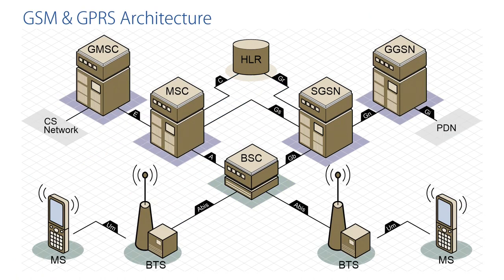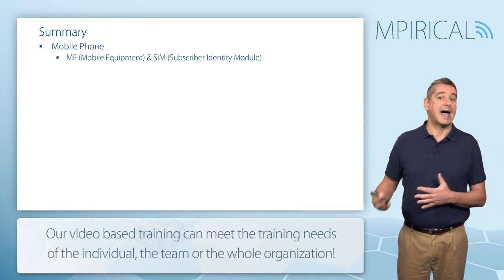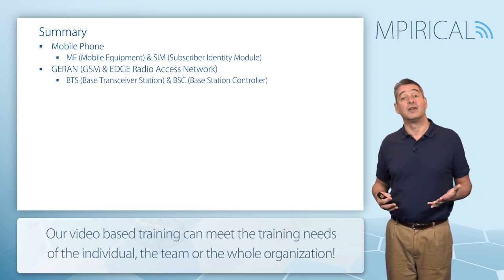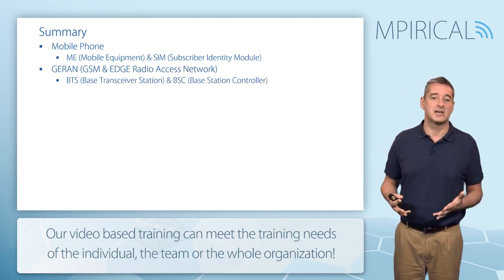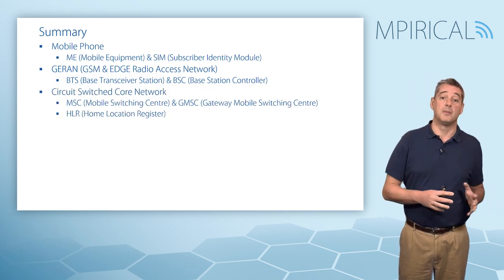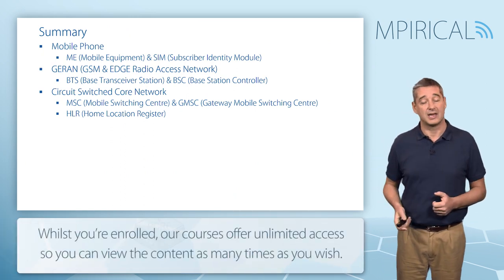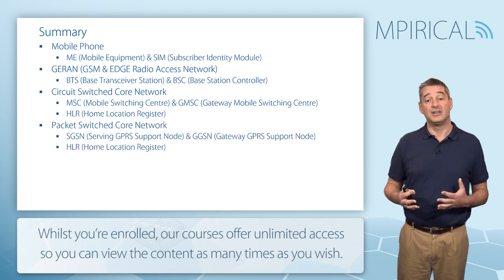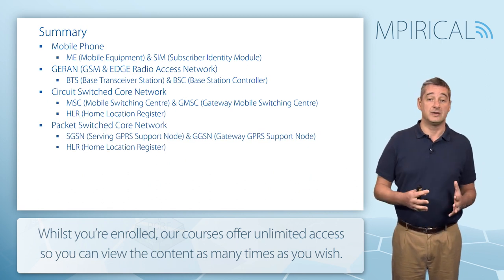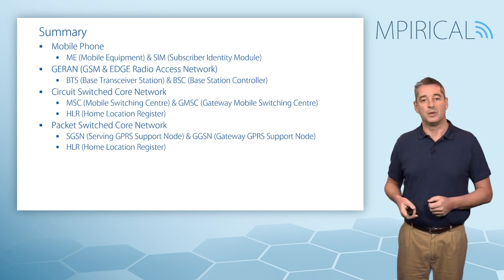So there we have the GSM and GPRS network architecture. In this session we looked at the key elements: the mobile phone, made up of the mobile equipment and the SIM card; the GRAN, comprised of base transceiver stations and base station controllers; the circuit switch core network of MSCs and gateway MSCs interacting with the Home Location Register; and finally the packet switch core network of SGSNs and GGSNs, again interconnecting with the Home Location Register.